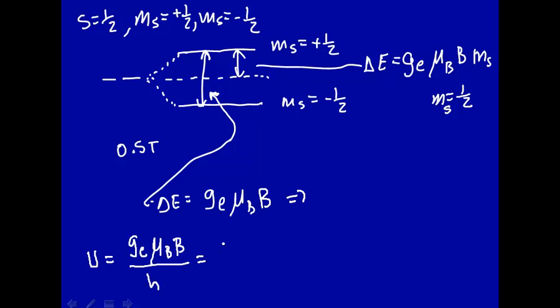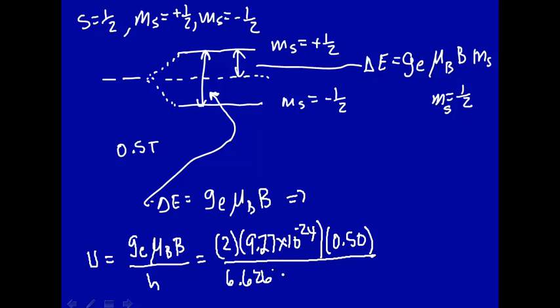Let's put those numbers in. Ge for an unpaired electron is about equal to two. The Bohr magneton is a constant, 9.27 times 10 to the minus twenty-fourth. B was 0.5 tesla. We're putting everything in SI units, so our frequency will be in Hertz here. H is 6.626 times 10 to the minus thirty-fourth. We put that in, we get 1.4 times 10 to the tenth Hertz or 14 Gigahertz.